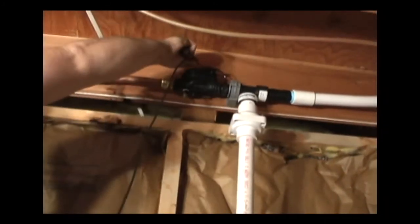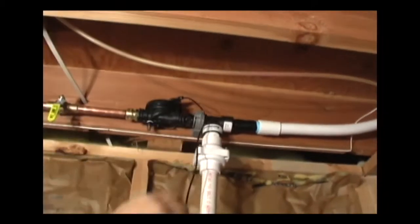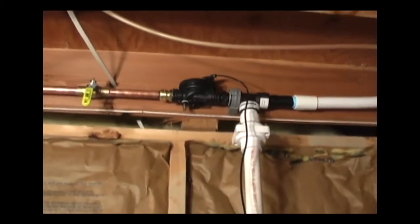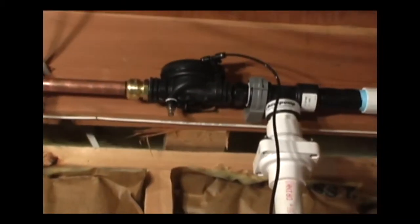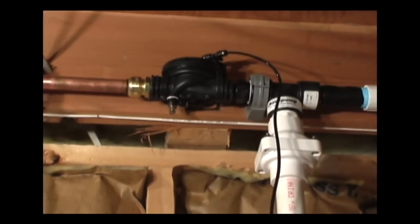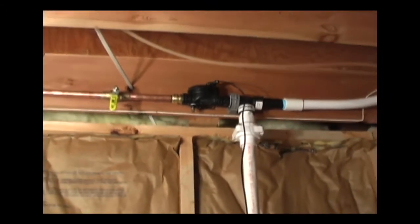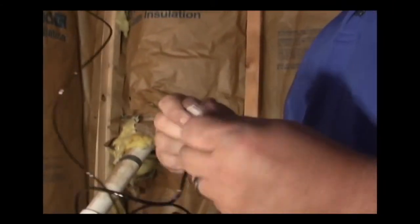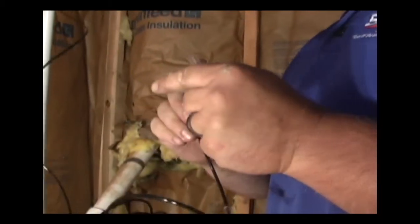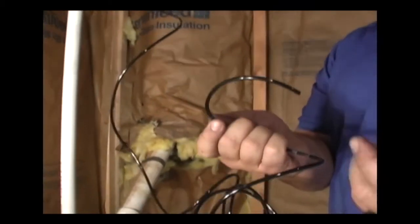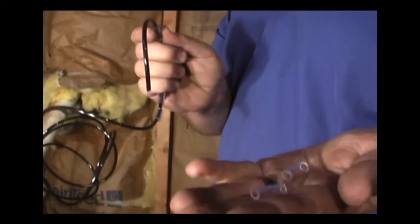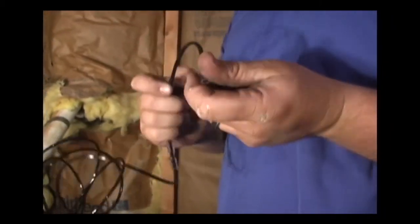The installer now inserts one end of the transfer tube into the small T-fitting at the top of the ejector valve and hangs the remainder down towards the floor. Before connecting the other end of the tube to the float, he will cut the included 6 inch piece of clear tube into five pieces and string them onto the transfer tube.